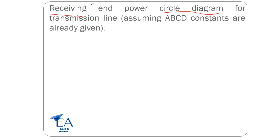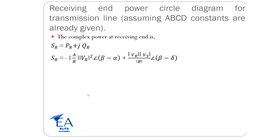That means SR. We know the formula for complex power at the receiving end: SR equals PR plus jQR, which is given by the formula SR equals minus mod(A/B) times |Vr|² at angle (beta minus alpha), plus |Vr||Vs| / |B| at angle (beta minus delta).